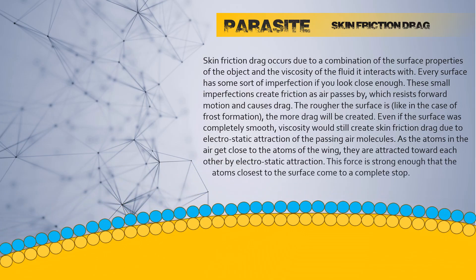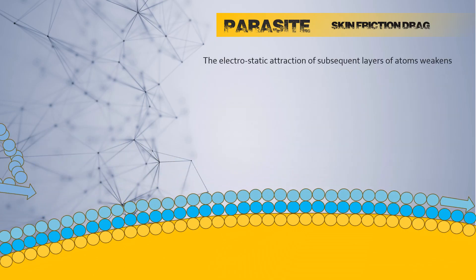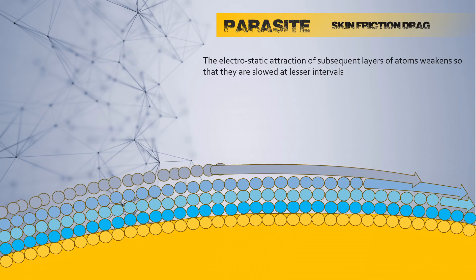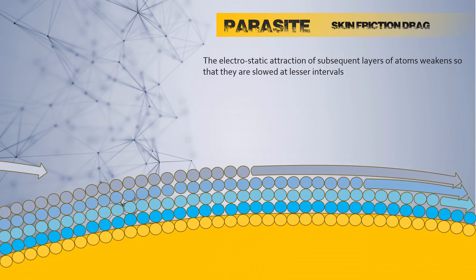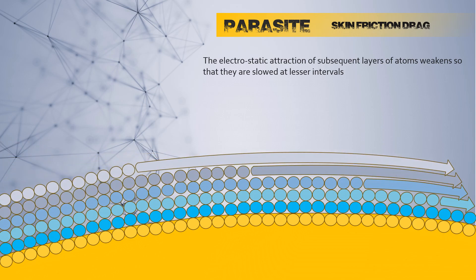This force is strong enough that the atoms closest to the surface come to a complete stop. This layer of stagnant air is called the boundary layer. The electrostatic attraction of subsequent layers of atoms weakens, so that they are slowed at lesser intervals until the free stream airflow is reached.